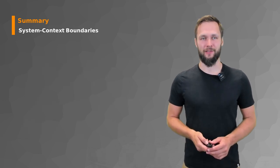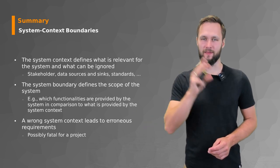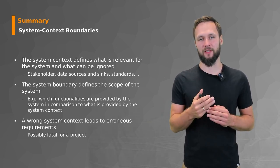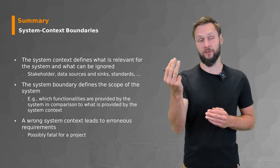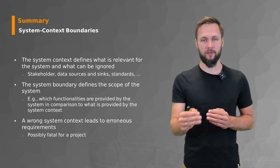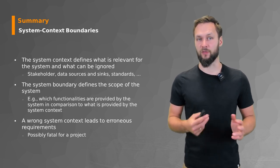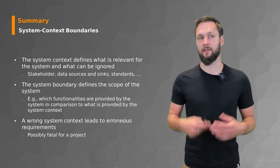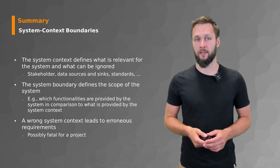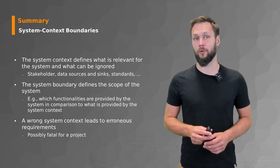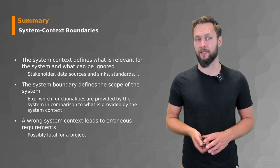To summarize what we learned in this lecture: we looked at the system, the system context, and the irrelevant environment, and discussed what separates the system from the system context — the system boundary — and what separates the system context from the irrelevant environment — the context boundary. The system context defines what is relevant for the system and what can be ignored, providing information about stakeholders, data sources, existing standards, and more. The system boundary defines the scope of the system and which functionalities are provided by the system versus the system context.